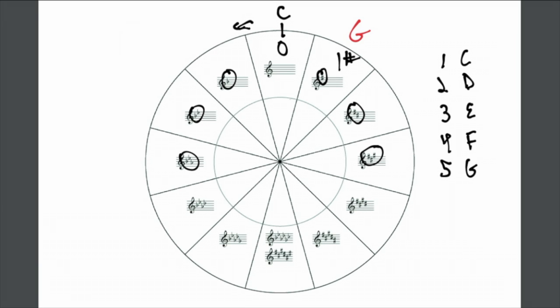We are going to do the same now for the flats. We're still going to count five. One, two, three, four, five. We will begin with C, and we're going to count down now, backwards.